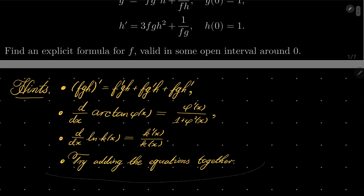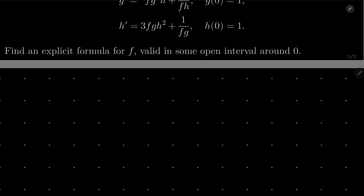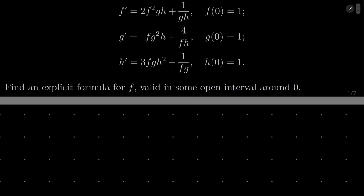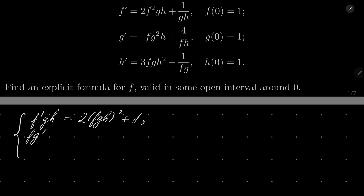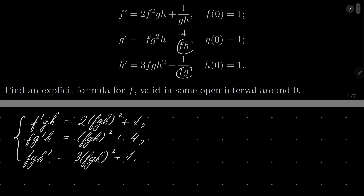Give this problem a try and I will see you in just a minute. Here is my solution. As I suggested, we can write our system of equations as follows: f'gh equals 2fgh² + 1, fg'h equals fgh² + 4, and fgh' equals 3 times fgh² + 1. So I have multiplied everything by those denominators.